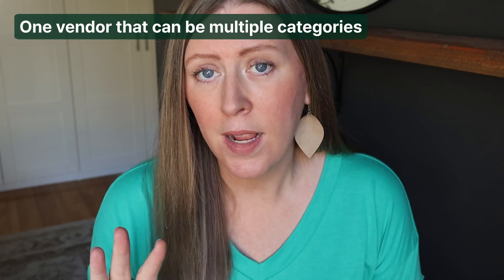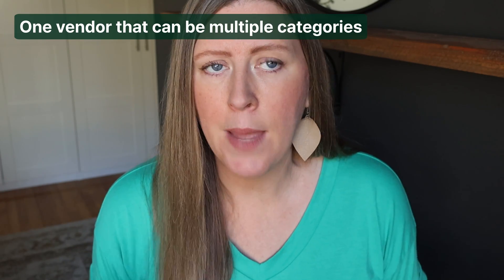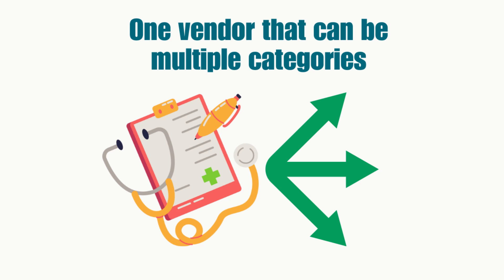Mistake number four is that QuickBooks always has trouble when a vendor can fall into multiple categories. This is where I have to go in manually and fix whatever it automatically categorized. It happens a lot with our health insurance because the transactions just come in as the word 'Providence,' and QuickBooks tries to categorize it the same way every time. But there are multiple things coming from Providence — some is Medicare, some is health insurance for all employees — so I need to use my brain and make sure everything is correctly categorized.